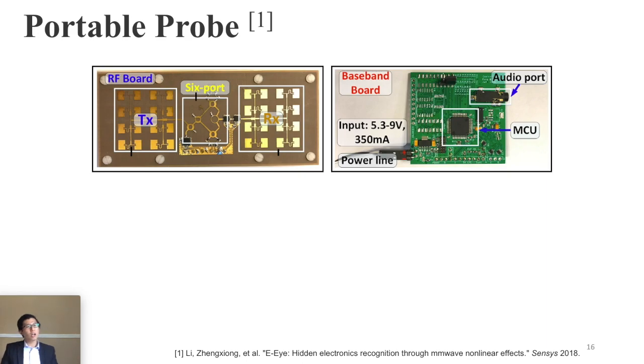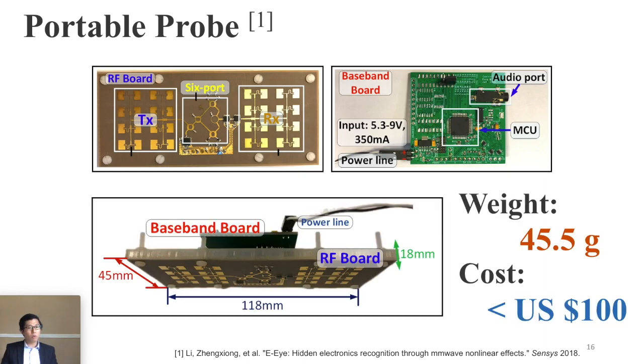For the last challenge, we utilize the millimeter wave probe, which is very portable, lightweight, low cost and small size. We did this probe in our SenSys 2018. This probe can easily be disguised by clothes or hidden in a handbag. So we totally solved these three mainstream technology challenges.